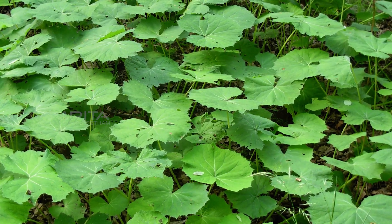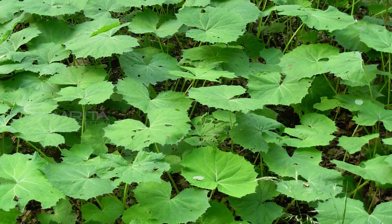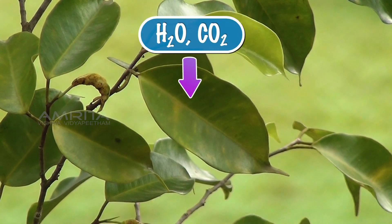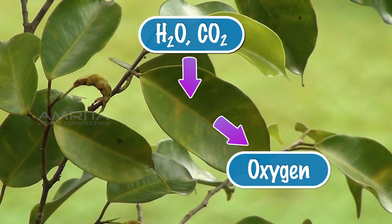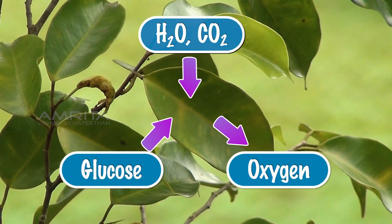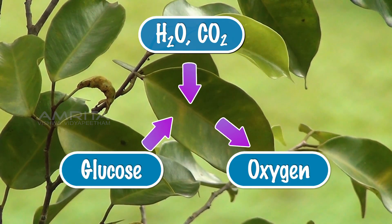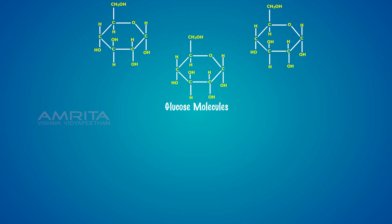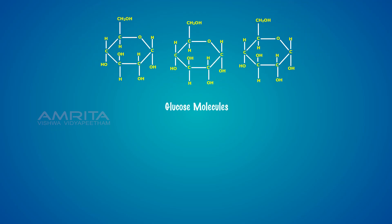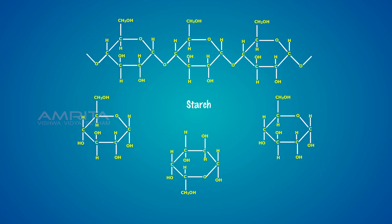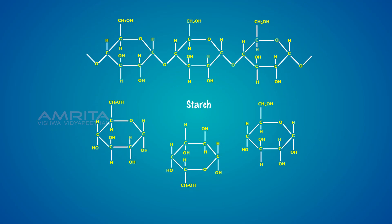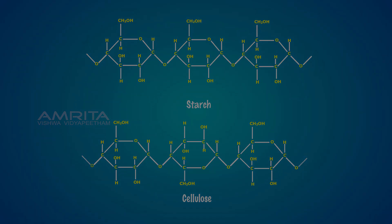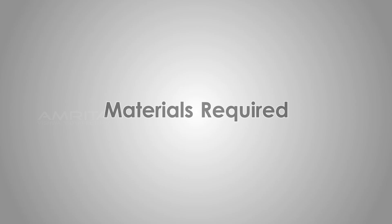In this process, inorganic compounds such as water and carbon dioxide are converted into organic materials such as glucose. Molecules of glucose later combine with each other to form more complex carbohydrates such as starch and cellulose.